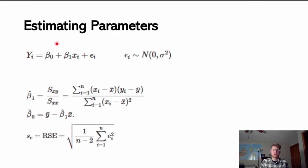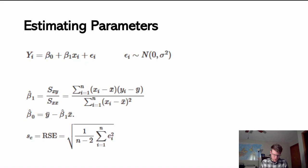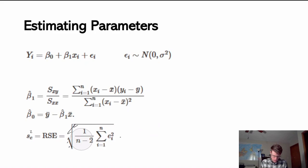Given those assumptions and these true parameters, the least squares method gives us a best estimate for what the parameters are given a sample of data. Given a sample of x and y pairs, our best estimate for beta hat one is represented by one equation, beta hat naught by another, and the residual standard deviation by a third equation. The residual standard deviation is an estimate for sigma sub e — and we go back and forth between residual standard deviation and residual variance since one is just a squared version of the other.